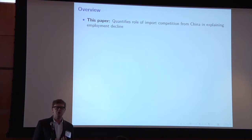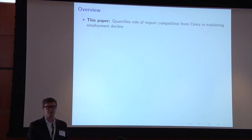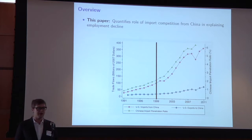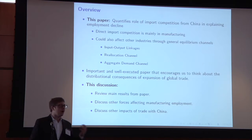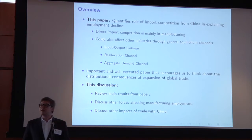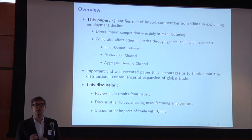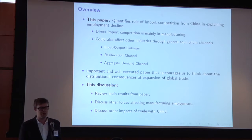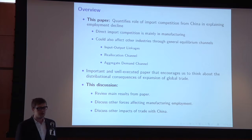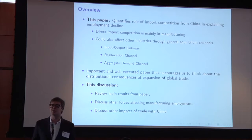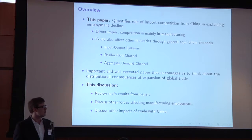The question this paper is trying to address is quantifying the role of import competition from China in explaining the employment decline. Import competition from China seems like a plausible explanation because of the acceleration of import growth from China that came when China entered the WTO and when many of the reforms David mentioned came into fruition. Part of the story this paper is telling, I think quite convincingly, is that while most direct import competition happens primarily in the manufacturing sector, there are a large number of other industries that might be affected through indirect links — input-output linkages, reallocation channels, and aggregate demand channels.